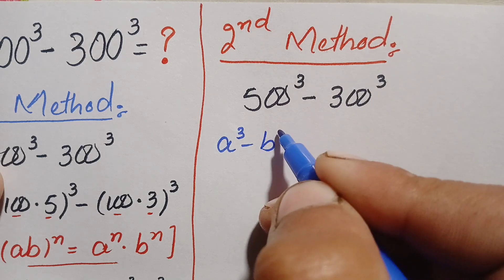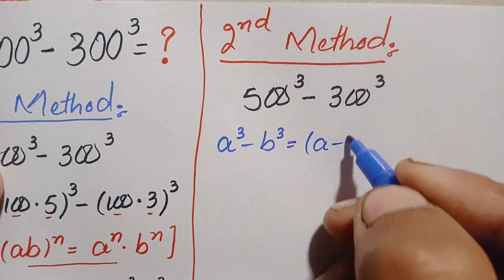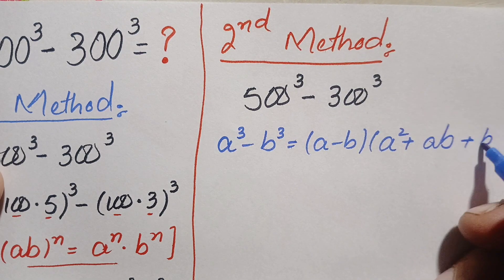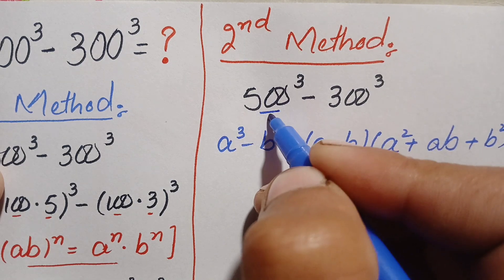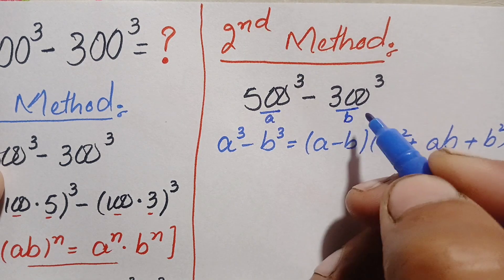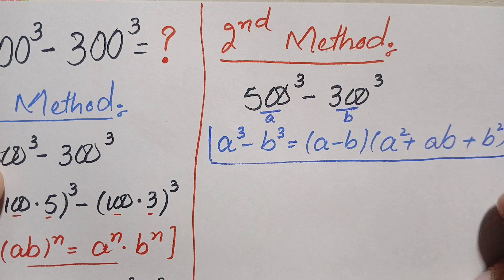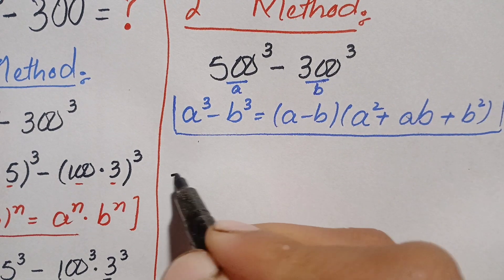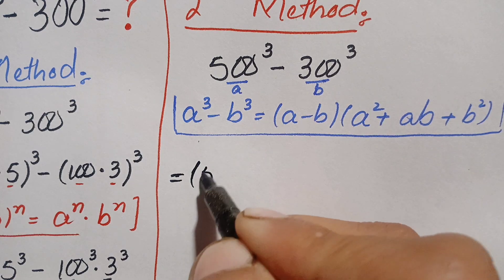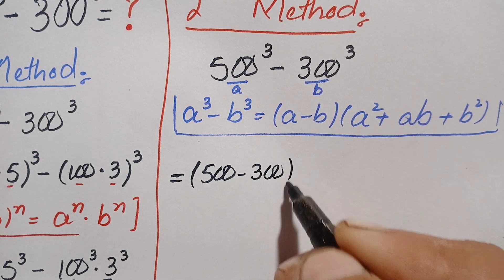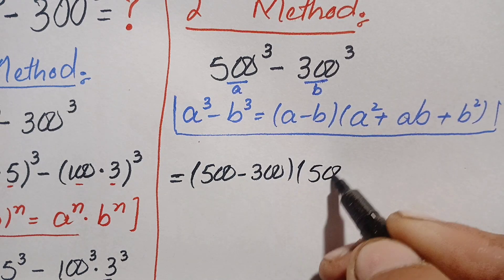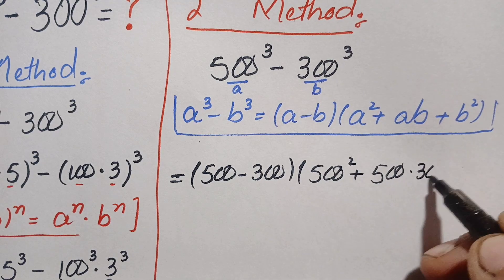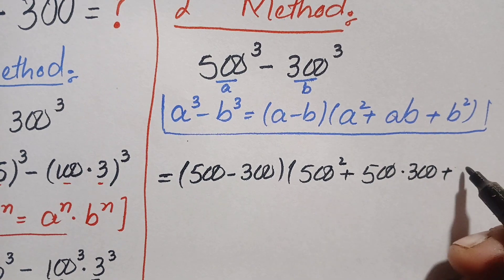The identity is: a cubed minus b cubed equals (a minus b)(a squared plus a×b plus b squared). Here a is 500 and b is 300. Substituting: (500 minus 300) times (500 squared plus 500×300 plus 300 squared).